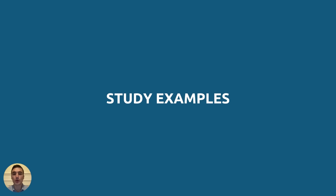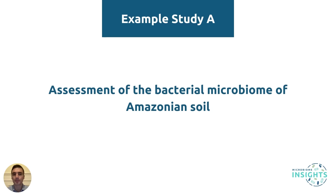To get an idea of what sequencing approach you might take for your study, let's go through some study examples. Example study A is assessment of the bacterial microbiome of Amazonian soil. As discussed, bacterial 16S rRNA databases may be more suitable for identifying rare or understudied taxa, as corresponding full reference genomes may not currently be available for these species. In this example study, 16S sequencing may provide more taxonomic resolution than metagenomic sequencing.